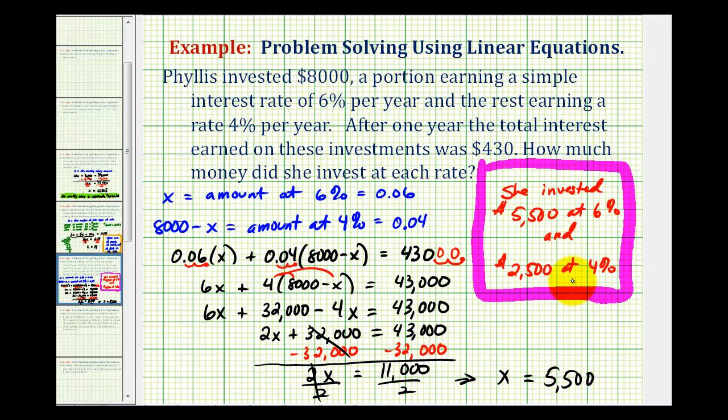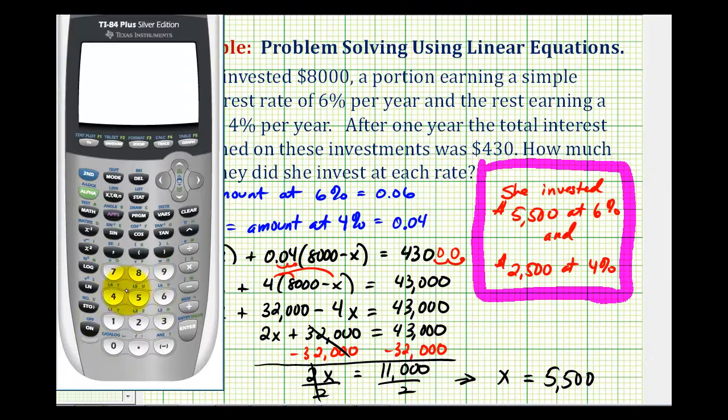Now let's go ahead and check this on the calculator. If we take $5,500, multiply it by 6% as a decimal, that would be 0.06 plus 2,500 times 4% as a decimal. We need to make sure that this would be $430, and this does verify that our solution is correct.